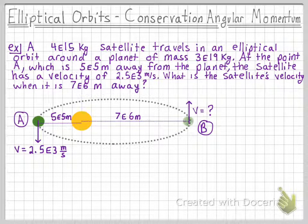Our diagram is going to look a little bit something like this, where we are missing the velocity of the satellite at point B.